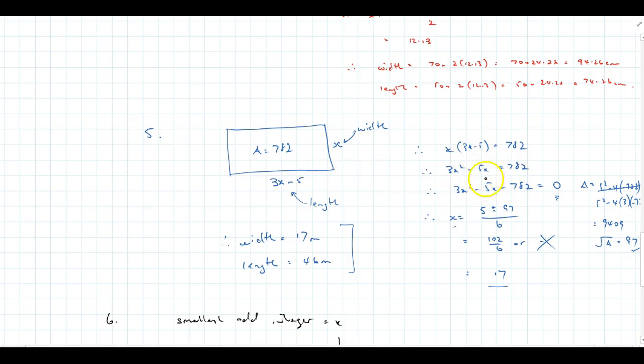So, expanding it out and collecting, making it equal to 0 again. That's really important. And then look at the discriminant, which has become my practice. Again, it is a square number, so it means I can factorise. As it happens, I've just gone into the quadratic formula.